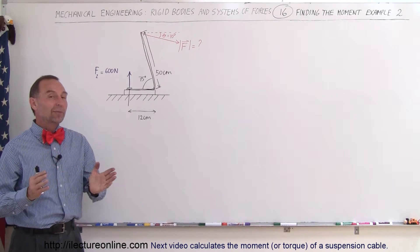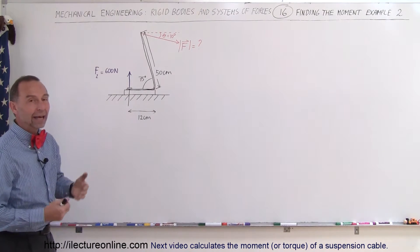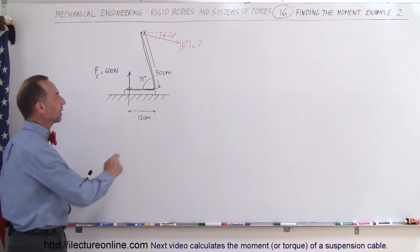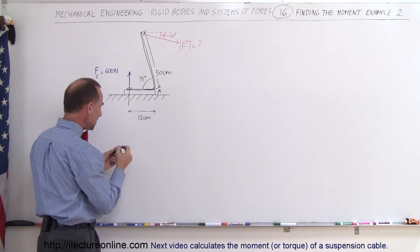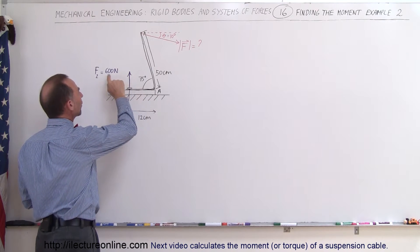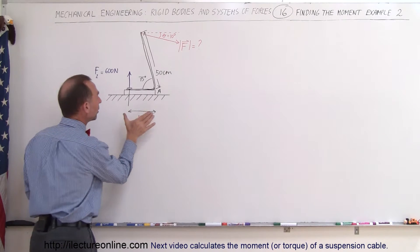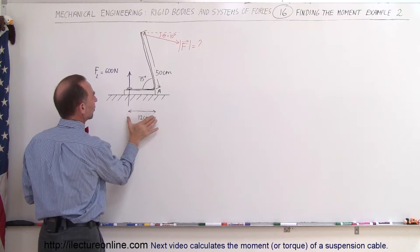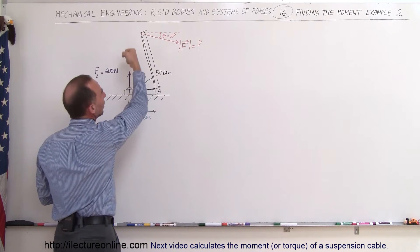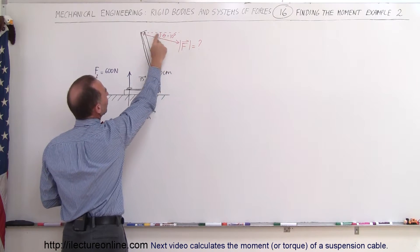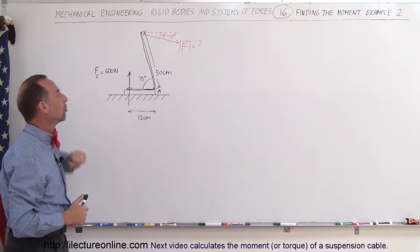Welcome to Electron Online. Here we're trying to remove a nail using a crowbar. The crowbar is pivoting at this location, let's call that location A. The nail will require a force of 600 Newtons to be removed. We're using a crowbar with a horizontal section of 12 centimeters and a vertical section of 50 centimeters, and we're applying a force at an angle of 10 degrees relative to the horizontal, pulling down. How much force is required to remove that nail?